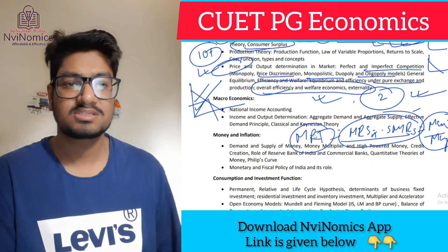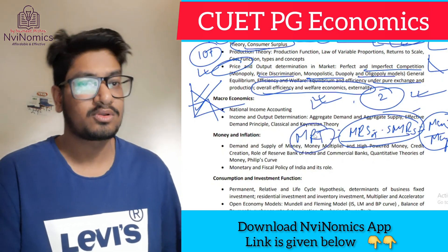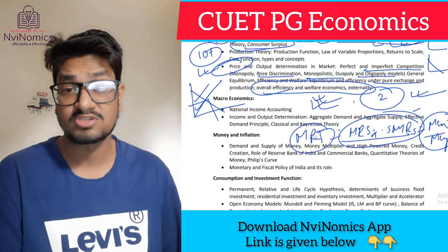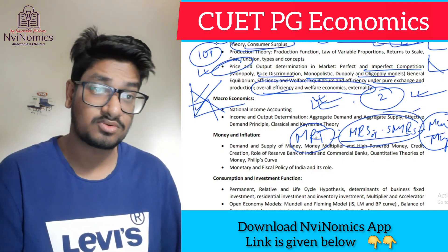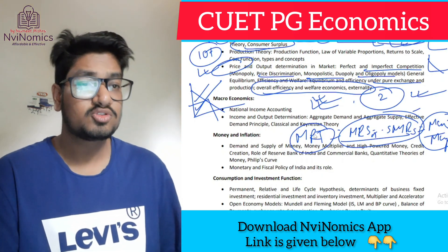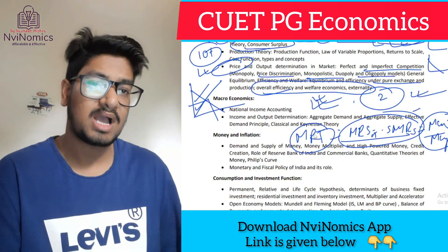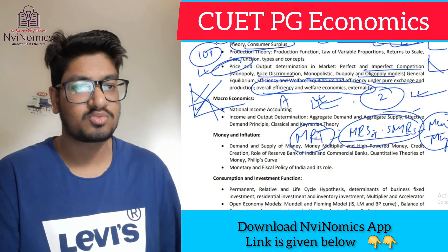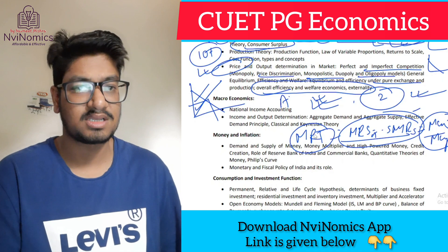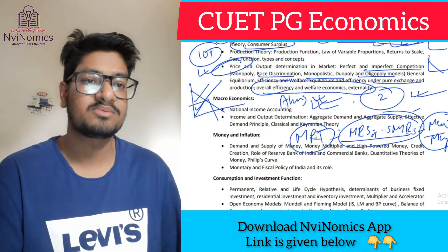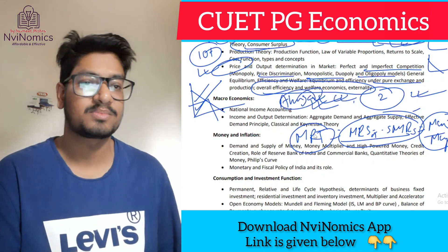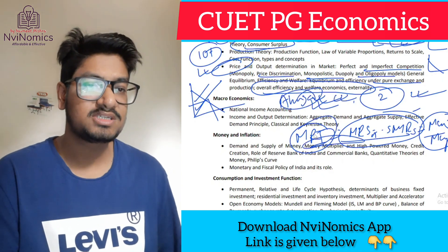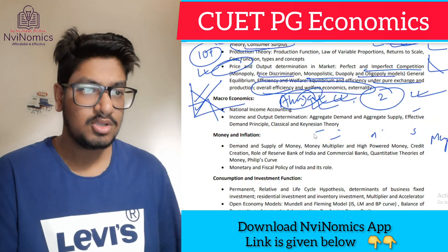Pareto efficiency has two features — the indifference curve must be convex to origin and tangent to the budget line. All these details are available in standard books and on Google. That covers the microeconomics discussion. Within two minutes I will discuss money, banking, and macroeconomics.